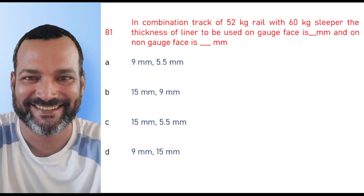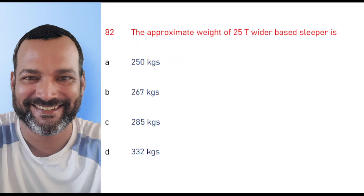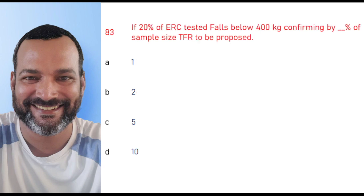The right option is 9 mm and 15 mm. That is, in combination of 52 kg rail with 60 kg sleepers, the thickness of liners to be used on gauge faces is 9 mm and on non-gauge faces is 15 mm. The approximate weight of 25-ton wider best sleeper is 332 kg.